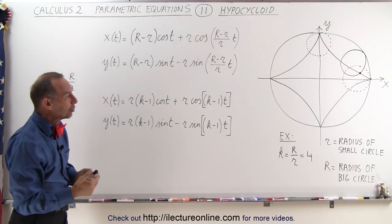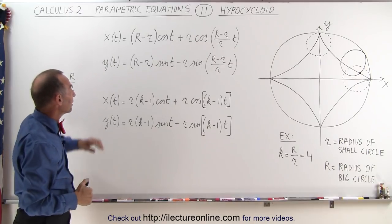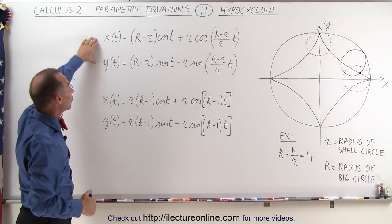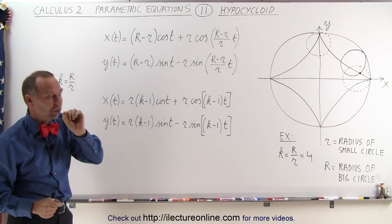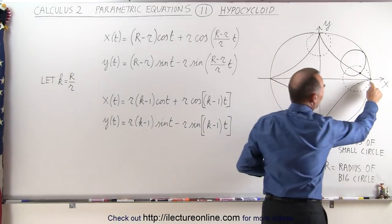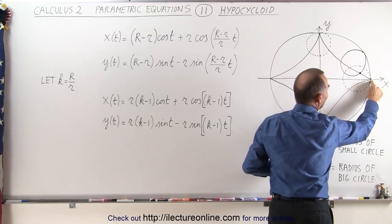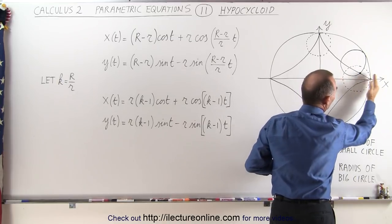But for the hypocycloid the ratio is 4 to 1. Now the equations, the parametric equations that define the position of the edge of the small circle. If it starts here at the x-axis, on the x-axis to the far right.